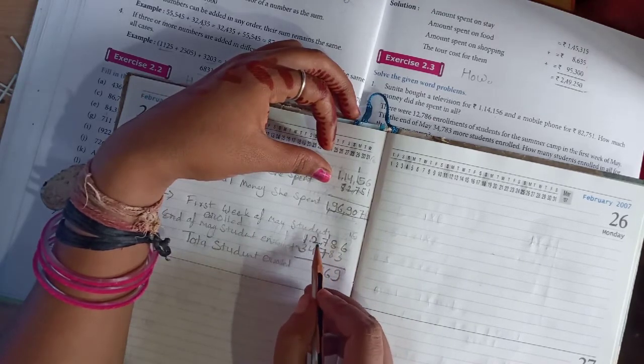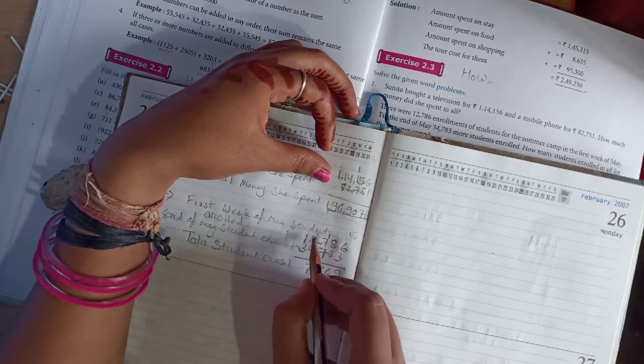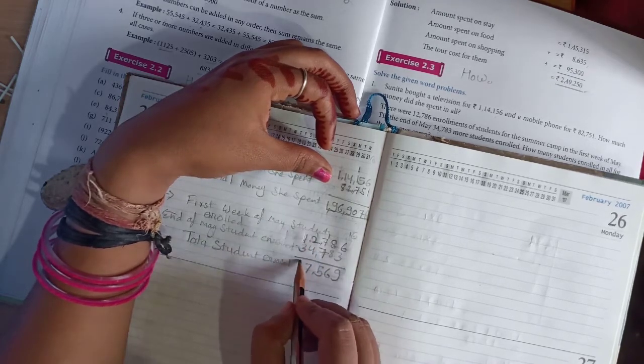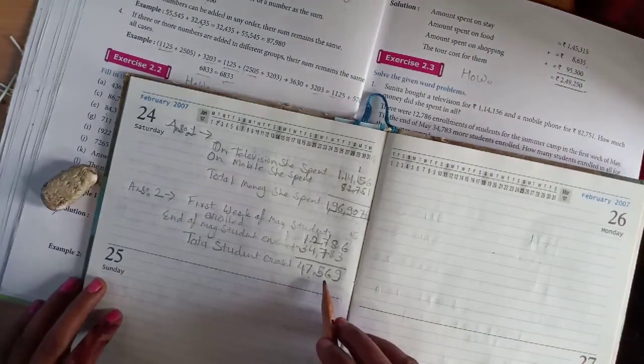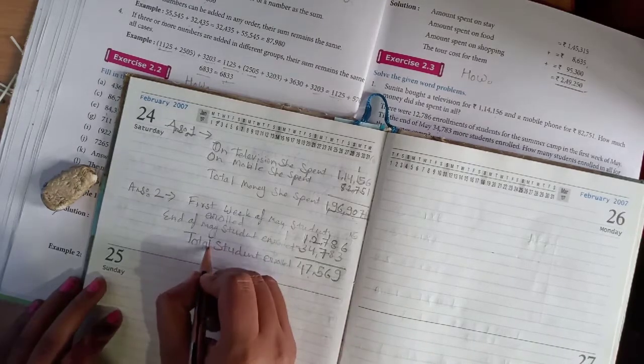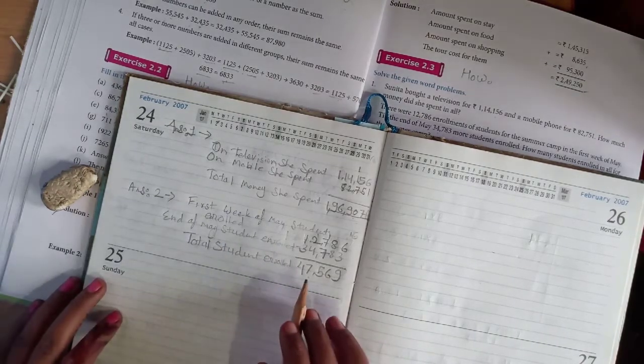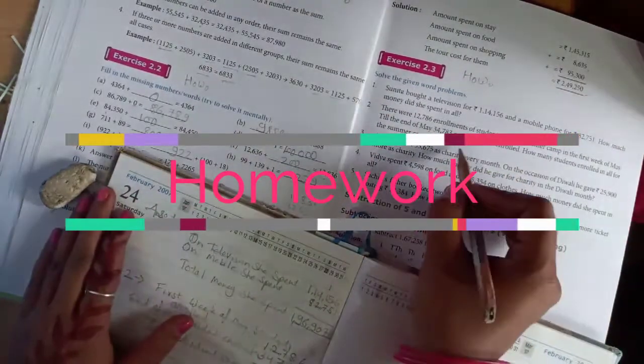4 plus 2 is 6, plus 1 is 7. 3 plus 1 is 4. So answer is 47,569 students total enrolled. Understood? Okay, these questions 3, 4, 5 are your homework. Do it yourself.